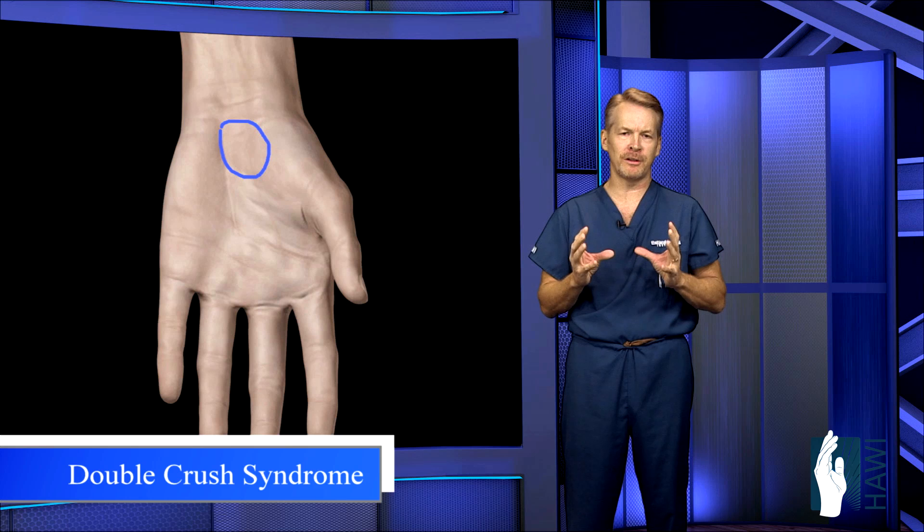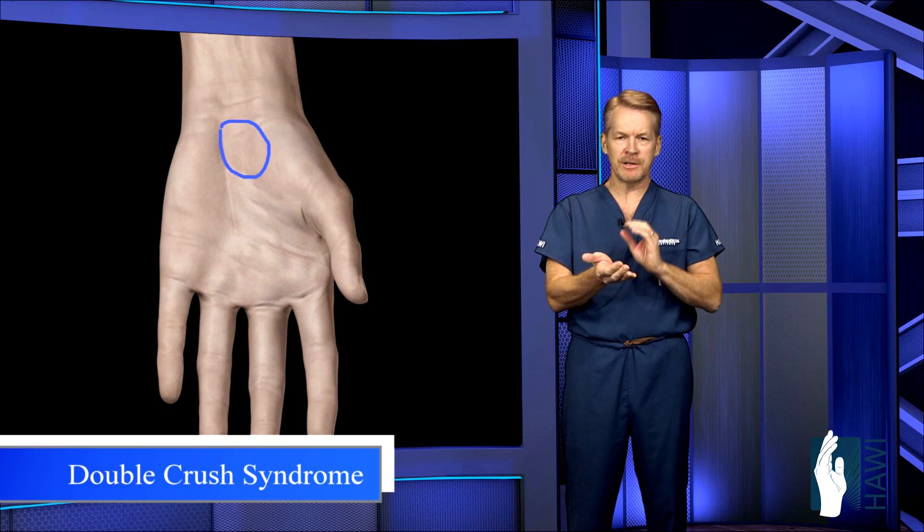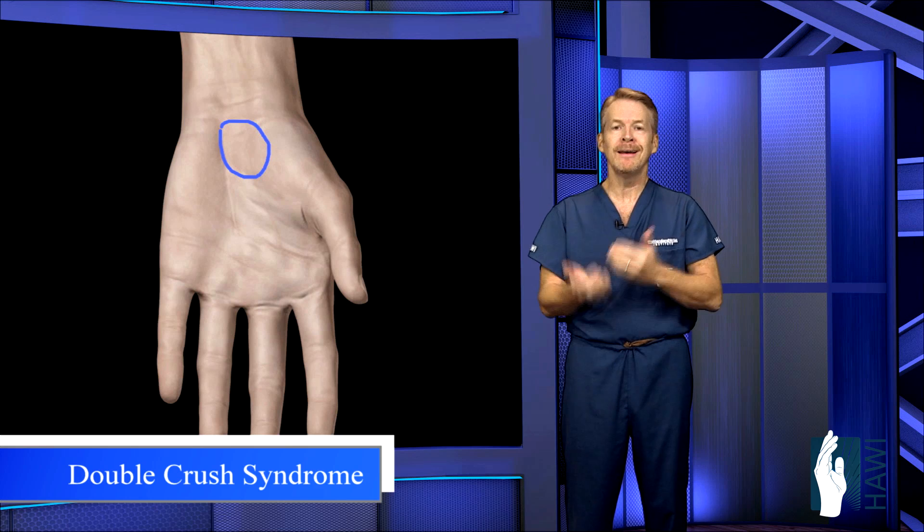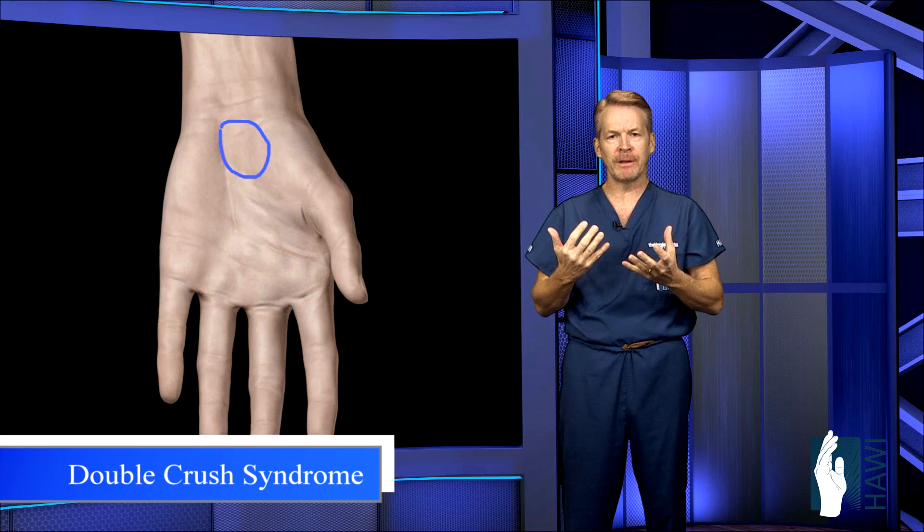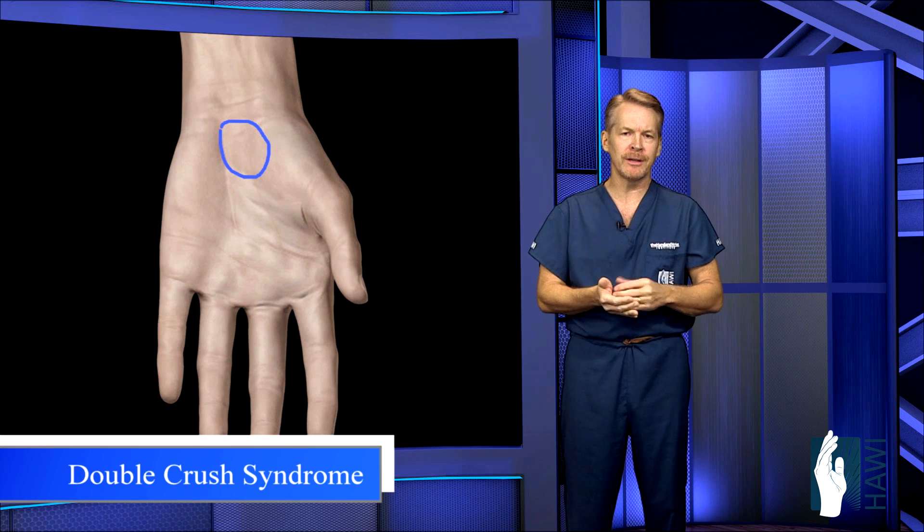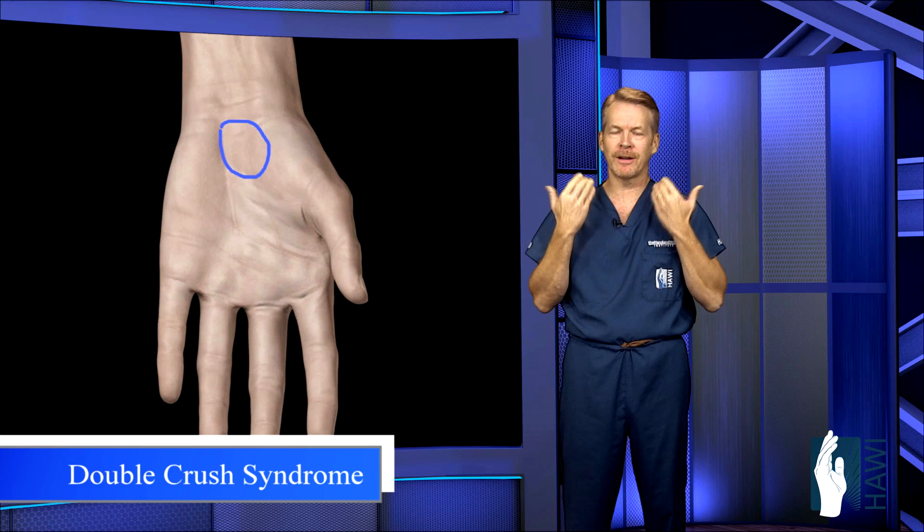Finally, it's called a double crush syndrome. This is where you can have a pinched nerve in two places, the carpal tunnel and very commonly a nerve in the neck that can have overlapping symptoms. You have the carpal tunnel surgery, you don't get complete relief because you still got to get your neck looked at.